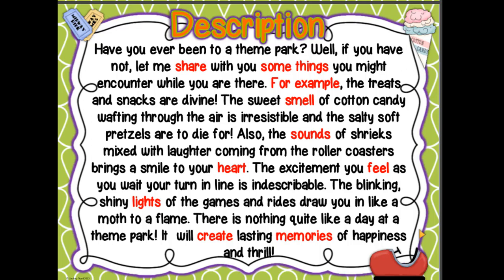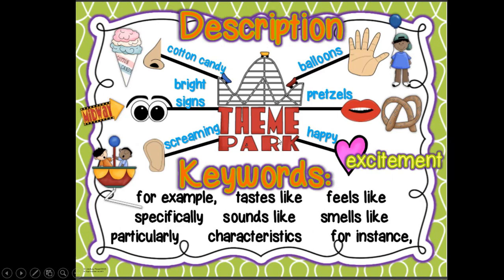All those words in red are clues telling us we're using a descriptive text structure. I have my web and I'm describing a theme park — that's what the text was about. The things described in the theme park include: cotton candy, bright signs, lots of screaming and laughter, balloons, yummy pretzels and snacks, and a feeling of happiness. Key clue words found in the text were: 'for example,' 'specifically,' 'particularly,' 'characteristics,' 'sounds like,' 'tastes like,' 'feels like,' 'smells like,' and 'for instance.'